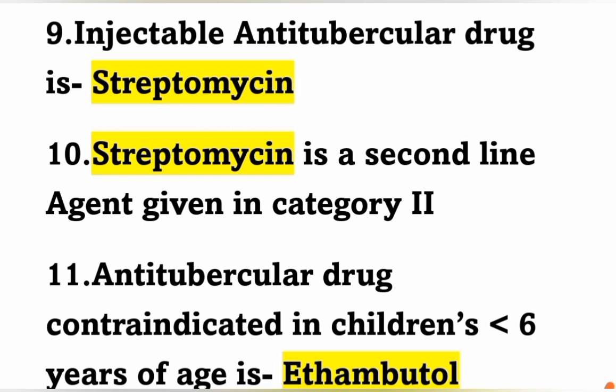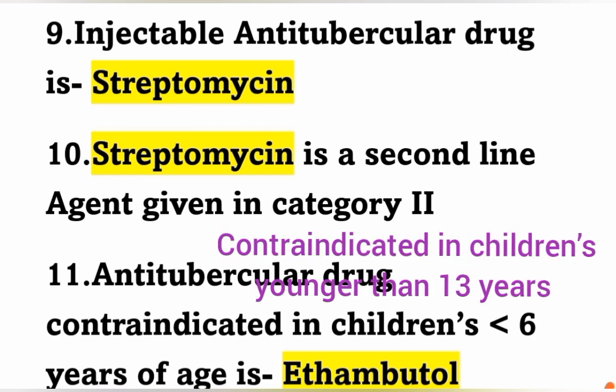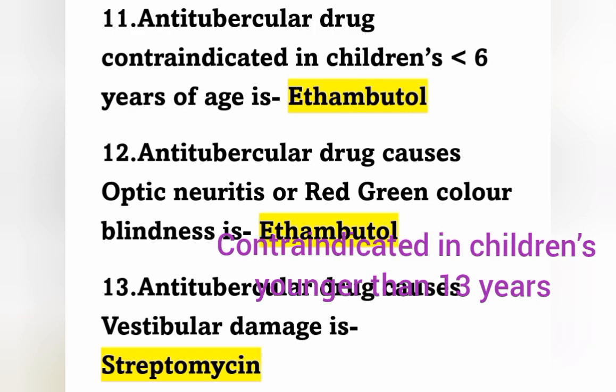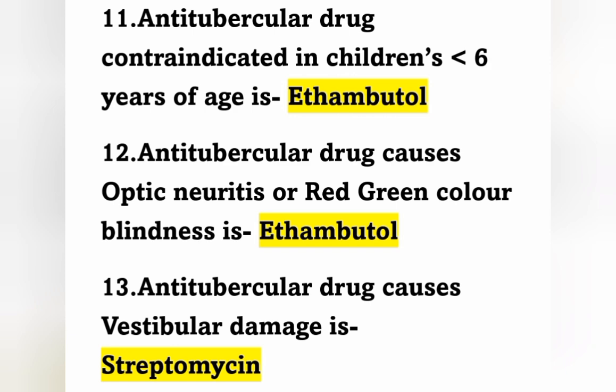Anti-tubercular drug contraindicated in children less than 6 years of age is Ethambutol. Usually Ethambutol is contraindicated in children younger than 13 years and also contraindicated with hypersensitivity or optic neuritis. It is generally not given up to the age of 13 years.